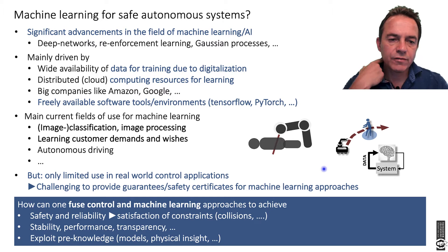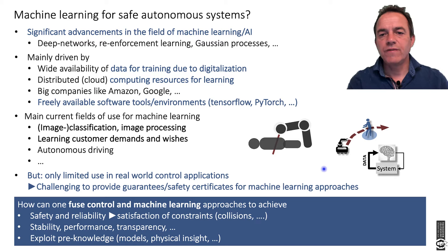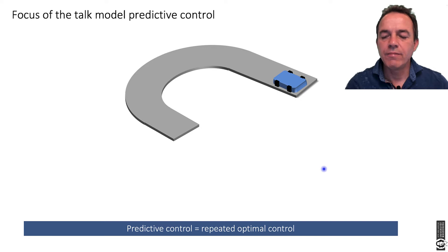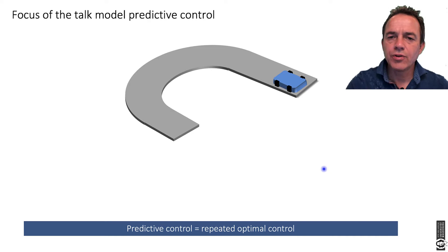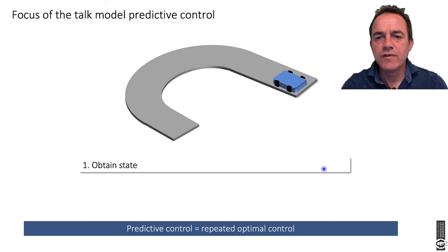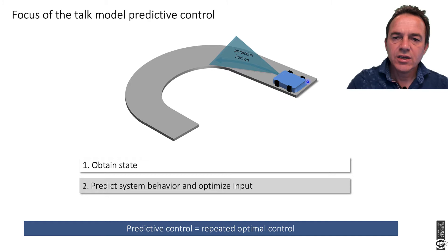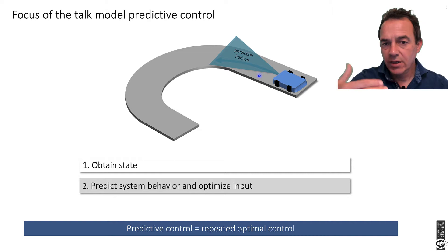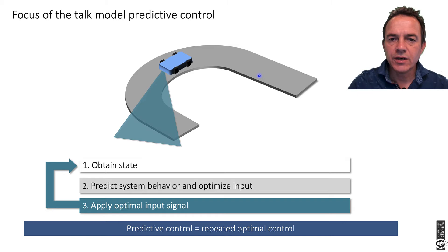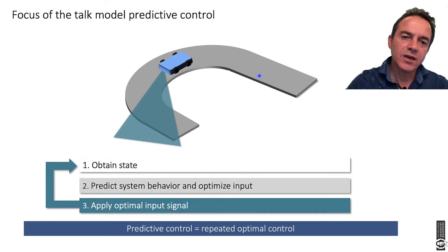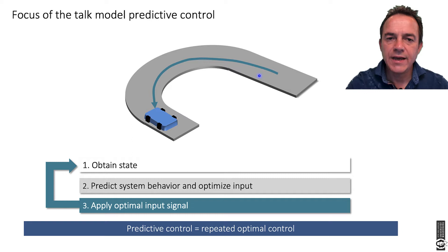This is actually the main purpose of this talk: how can we fuse methods from control with machine learning approaches while providing stability, performance, transparency, and at the same time exploiting model knowledge? I want to do that in the frame of model predictive control. Model predictive control is nothing else than: you obtain a state, look forward with a model based on that information, predict the future, optimize the input, select an optimal input, move a little bit along that path, and repeat.